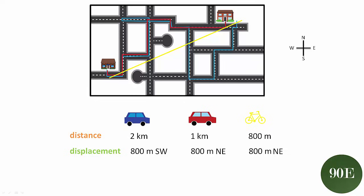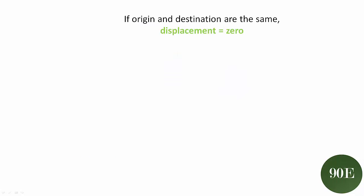There's one other aspect of displacement that we need to touch on, and that's the same with all vector quantities. If the origin and the destination are the same, the displacement will equal zero. What do we mean by this? Well, we know that every 365 days, well, 365 and a quarter days, the Earth orbits the Sun once.